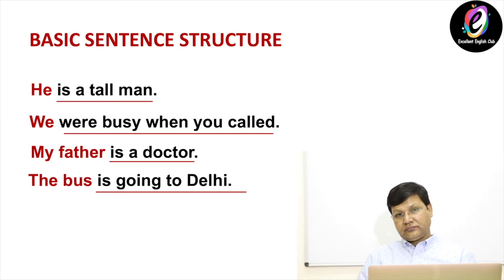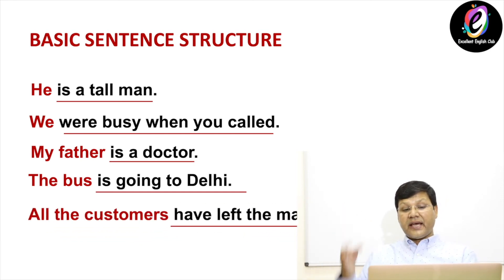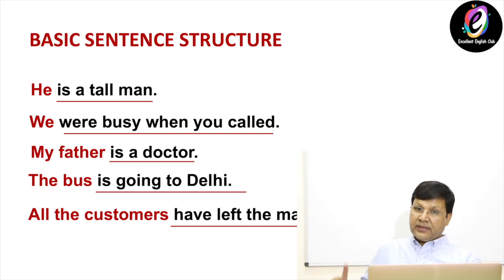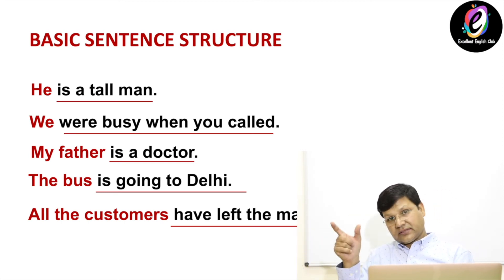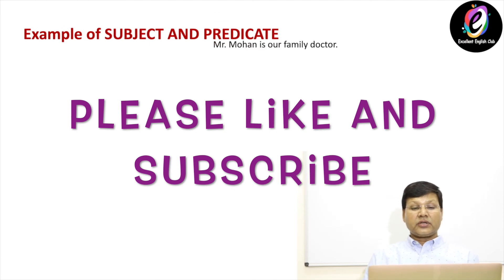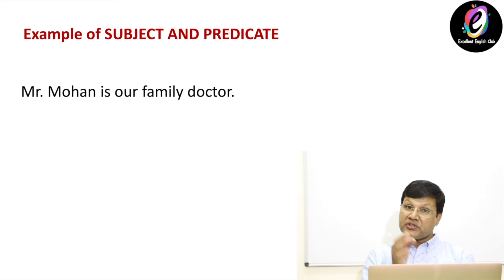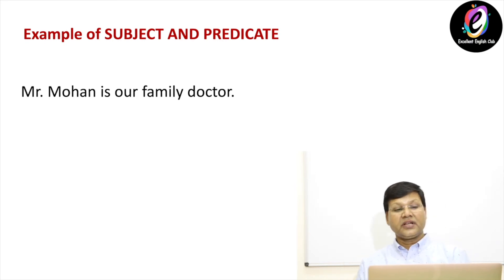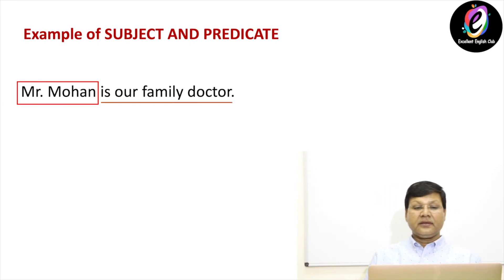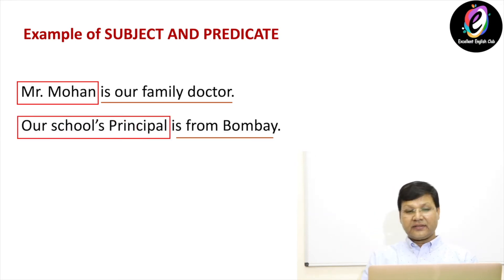Next: 'The bus is going to Delhi.' Some more examples: 'Mr. Mohan is our family doctor.' What is the subject in this sentence? Mr. Mohan is the subject; 'is our family doctor' is the predicate. Another example: 'Our school's principal is from Bombay.' 'Our school's principal' is the subject; 'is from Bombay' is the predicate.